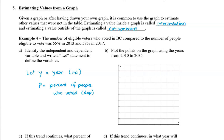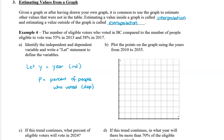In part b, plot the points on the graph using the years from 2010 to 2035. We can start 2010 over here, and then skip count by 5 to get to 2035. So we'll have 2015, 2020, 2025, 2030, and 2035. This is our year axis.